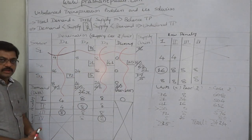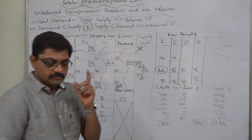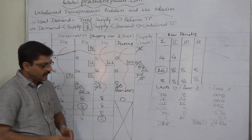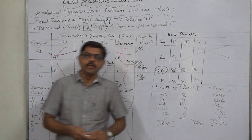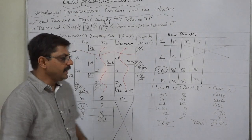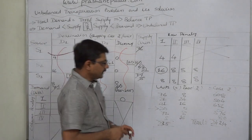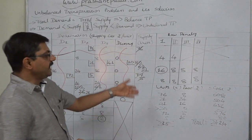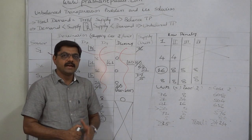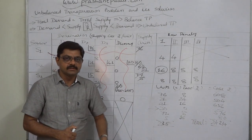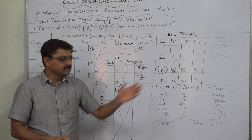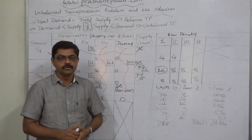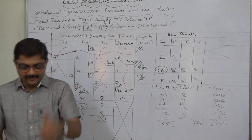This is the initial solution obtained via VAM. To verify optimality, we still need to check using the closed path or closed loop method. If it proves to be non-optimal, we must apply the stepping-stone method to get the optimal solution. That exercise is left for you to try. All the best.